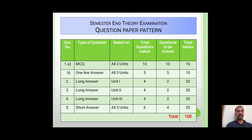Sub-question B of Question 1 has one-line answer type questions based on all 3 units. There will be 5 questions and the student has to attempt all 5, each carrying 2 marks, totaling 10 marks.